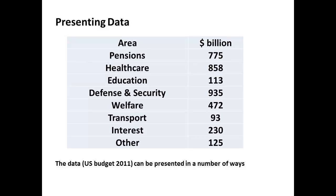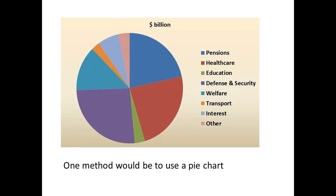The data presented here was taken from the US budget for 2011. I have grouped some items to keep it simple. My first thought might be to produce a pie chart. A pie chart is made up of 360 degrees, and each slice is a measure of the fraction of 360 degrees for that item. We can see that defence is the largest item of expenditure, and that education is a relatively small item of expenditure.